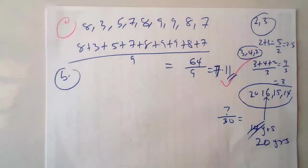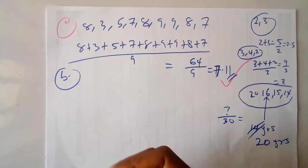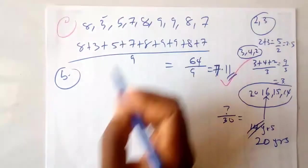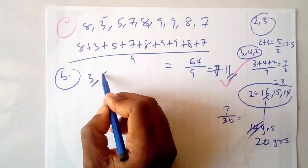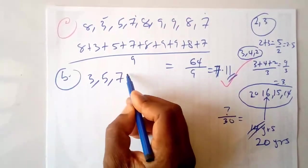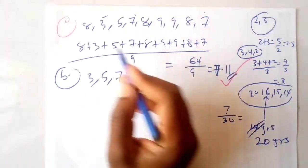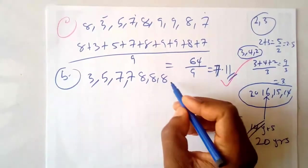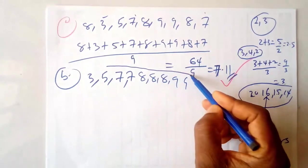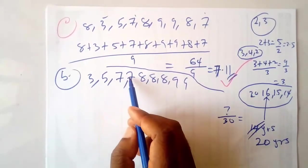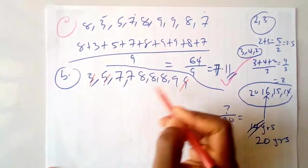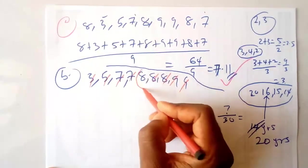So we arrange our scores in ascending order: 3, 5, 7, 7, 8, 8, 8, 9, 9. Let me count — yes, that is nine values. To find the middle term, you can cancel from both ends: cancel the first and last, then the next pair, and so on. You can see the median is 8. Eight is the middle value after arranging in ascending order.